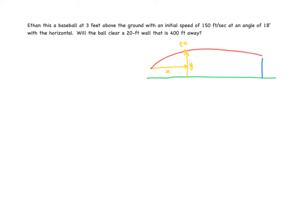So let's write our parametric equations first. And again, we're just going to use those formulas. The horizontal would be x equals 150 cosine of the launch angle, 18 degrees, times t. And the vertical position would be given by y equals negative 16t squared plus 150 sine of 18 degrees times t. And then we have an initial height plus 3.